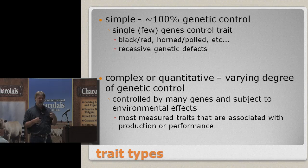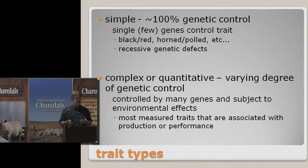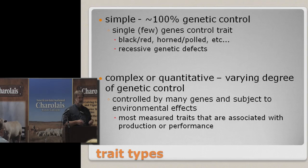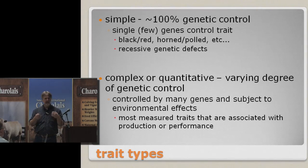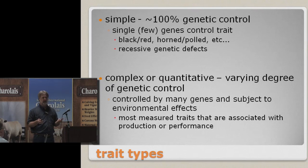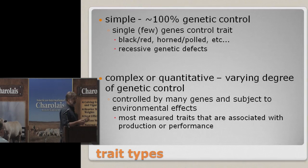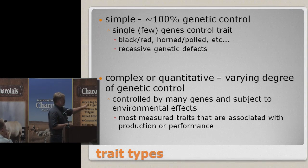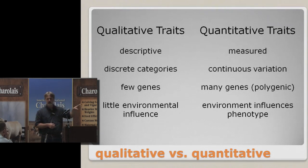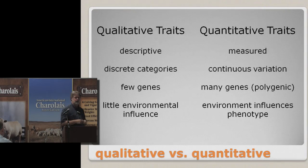Quantitative traits are defined as being controlled by many genes, and they are. The added feature of quantitative traits is that all the time, these traits are also controlled by environment. A high genetic merit individual for growth won't realize that genetic potential if you don't feed him very much. That's a quantitative trait — controlled by lots of genes, with significant environmental influence. These are all the traits that you get dollars for: extra pounds of calf, quality grade, et cetera.